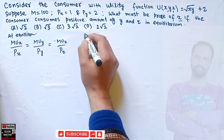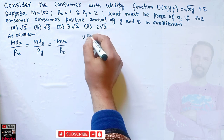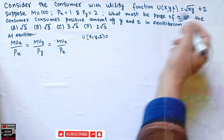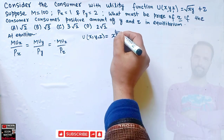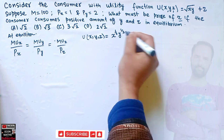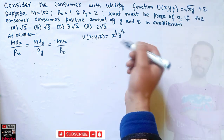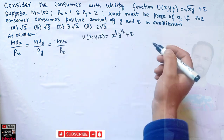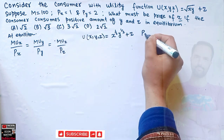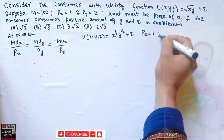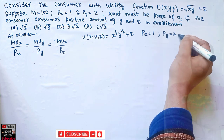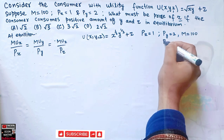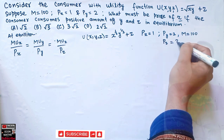We have the utility function U(x,y,z) = x^(1/2) · y^(1/2) + z. We are given: price of x = 1, price of y = 2, income of the consumer = 100. We have to find the price of z.